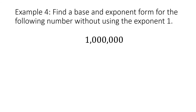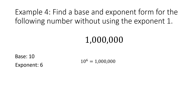Let's look at example 4, which is similar to example 3. Find a base and exponent form for the following number without using the exponent 1. We have 1 million. As we learned previously, the base is going to be 10, and to find the exponent we count the number of zeros. Here we have six zeros, so 10 to the sixth power equals 1 million. The base is 10 and the exponent is 6.